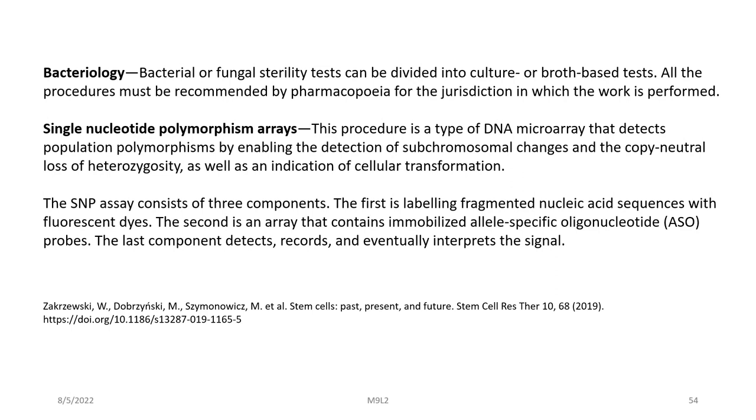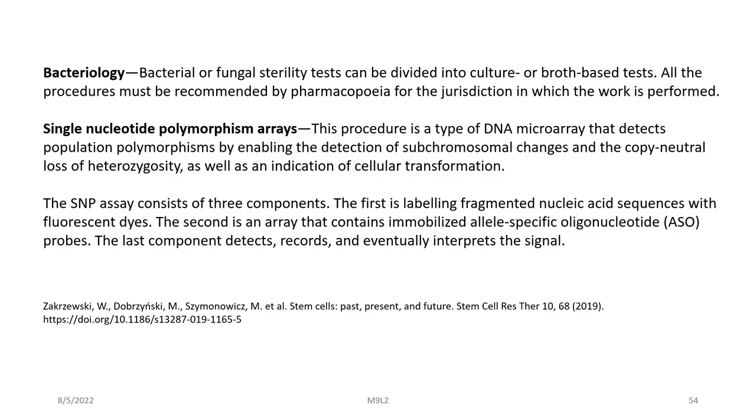Bacterial or fungal sterility tests can be divided into culture or broad-paste tests, and all procedures must be recommended by pharmacopoeia for the jurisdiction in which the work is performed. In SNP polymorphism arrays, we detect populations of polymorphisms by enabling the detection of subchromosomal changes, copy-neutral loss of heterozygosity, and indication of cellular transformation. The SNP assay consists of three components: labeling fragmented nucleic acid sequences with fluorescent dyes, an array containing immobilized allele-specific oligonucleotide probes, and a detector that records and interprets the signal.